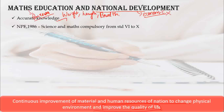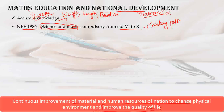One important point is that the National Policy on Education in 1986 made Science and Maths compulsory from Standard 6th to 10th. This shows the national-level importance of science and maths education. Learning maths changes your thinking pattern itself.